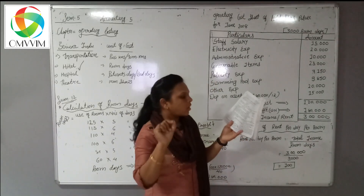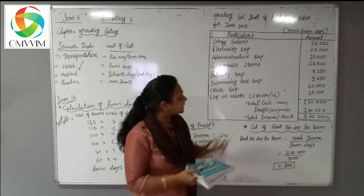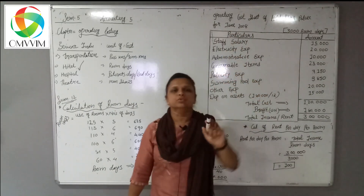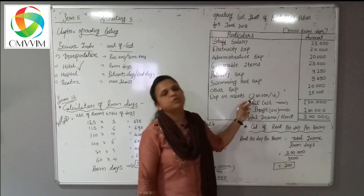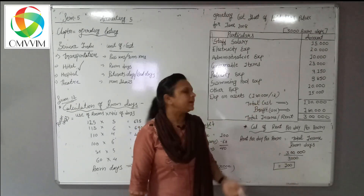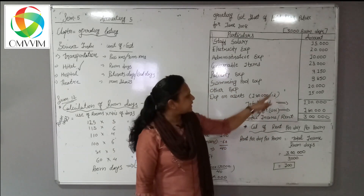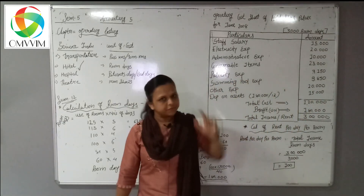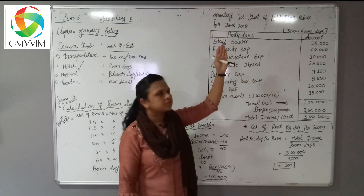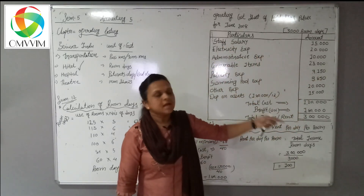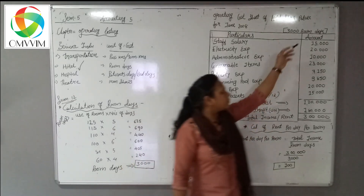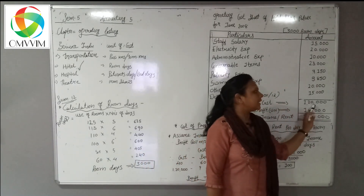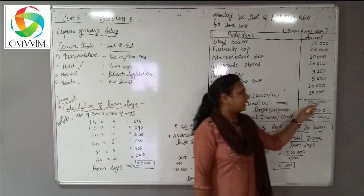Now concentrate on the depreciation of assets instruction. The depreciation on assets is given as 1,80,000 annually. But we are preparing the cost sheet only for the one month of June. Since the depreciation is given annually, to find the one-month depreciation we divide 1,80,000 by 12 months, giving us 15,000 as the one-month depreciation.